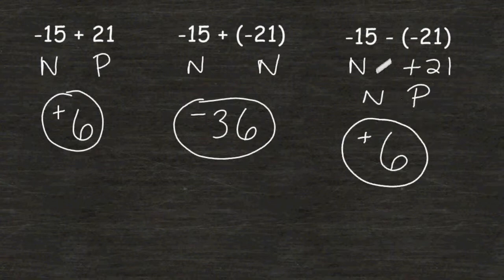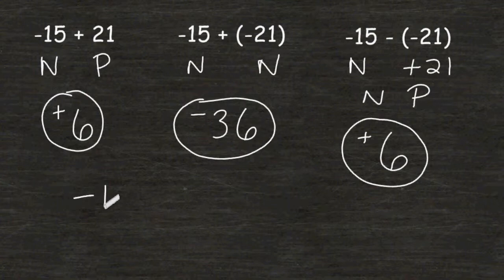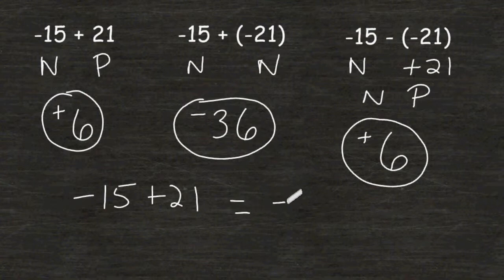So this third example ended up being exactly like our first example. Negative 15 plus 21 is the same thing as negative 15 minus negative 21.